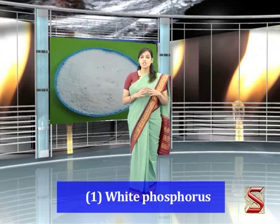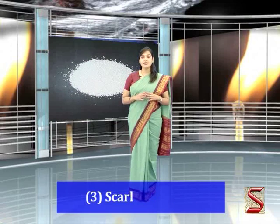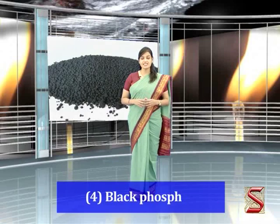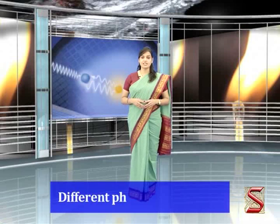The different allotropic forms of Phosphorus include: 1. White Phosphorus, 2. Red Phosphorus, 3. Scarlet Phosphorus, 4. Black Phosphorus, and 5. Violet Phosphorus. All these allotropic forms have similar chemical properties but different physical properties.